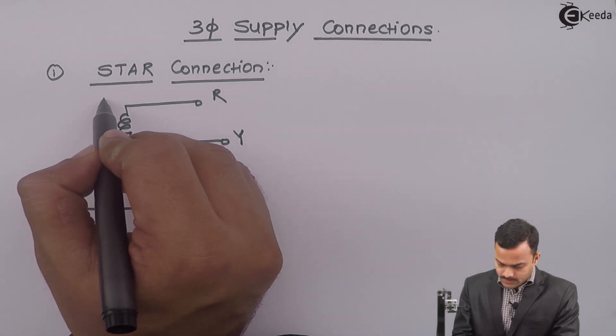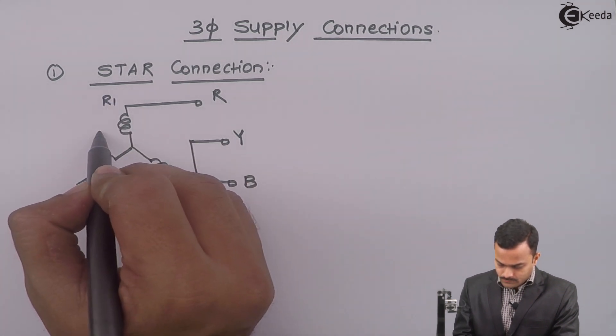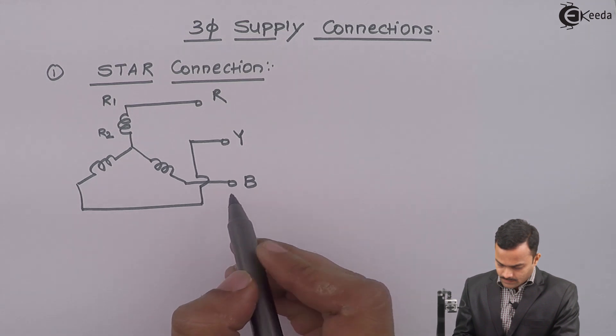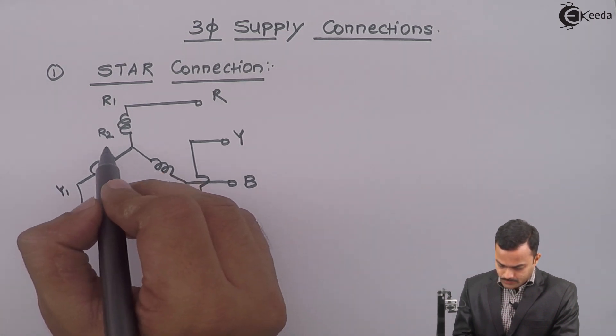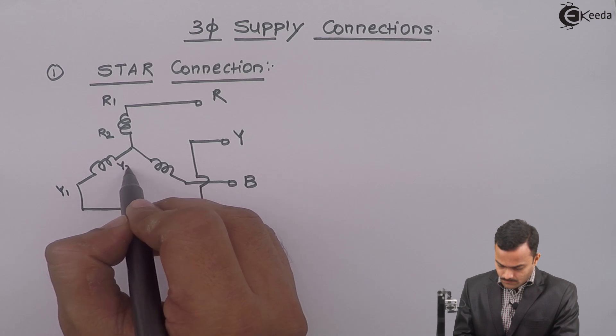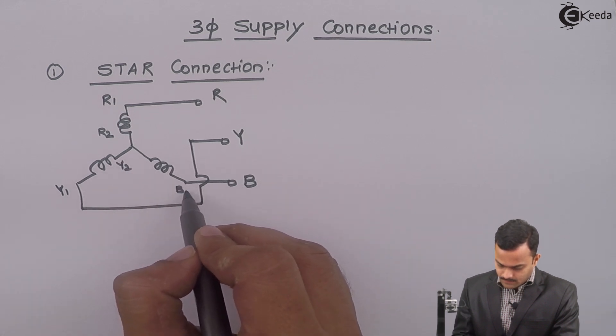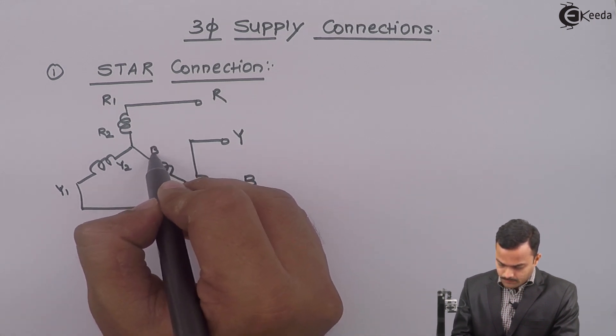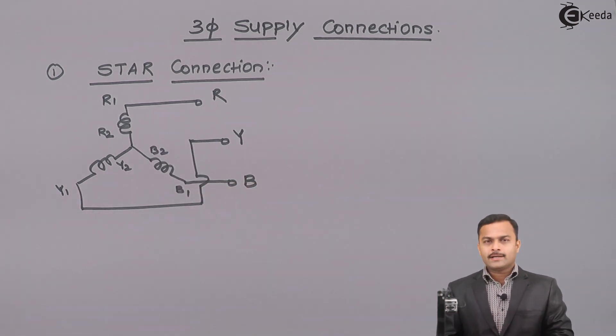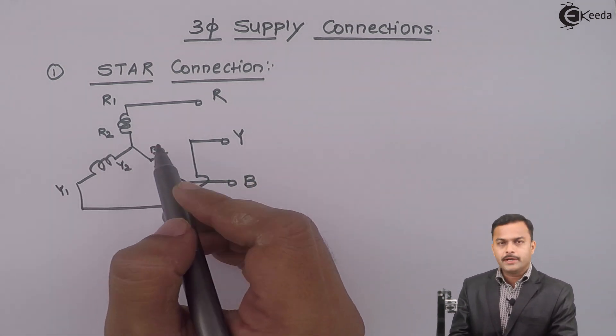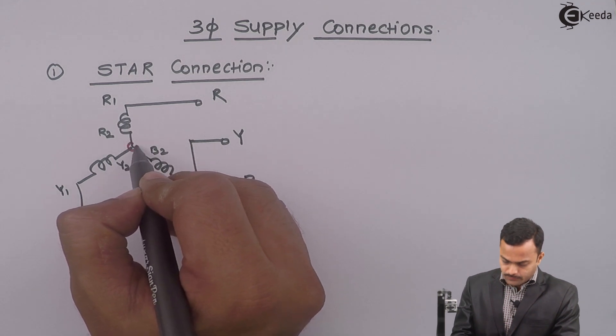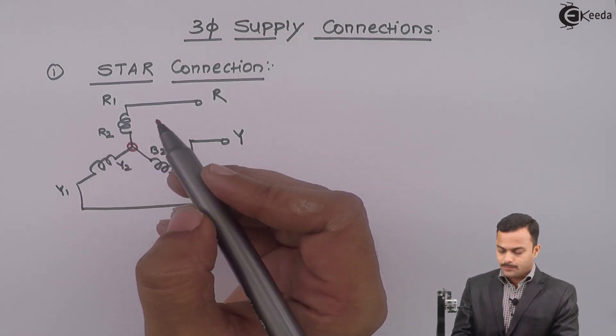This is R1, R2. This will be Y1, Y2. And this is B1, B2. So, one end of each winding, that is R2, Y2, B2 connected together to form a star or a neutral point.